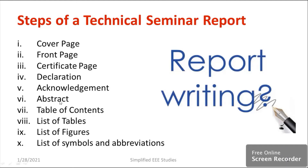Regarding the abstract: the abstract gives the whole idea about the topic. If you read the abstract, the reader should get the entire information about the project — what is the problem, how you are finding the problem, what is the methodology, and how you are solving that particular problem. All those things should be available in the abstract. It should be precise and written in simple language. Maximum half a page is allowed. Don't add excessive technical jargon in the abstract.